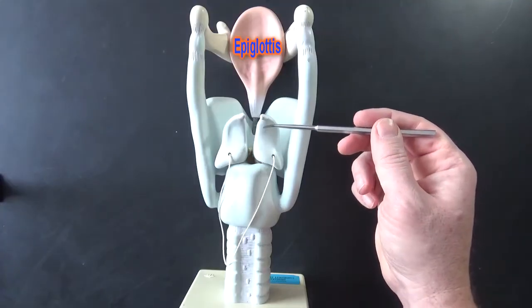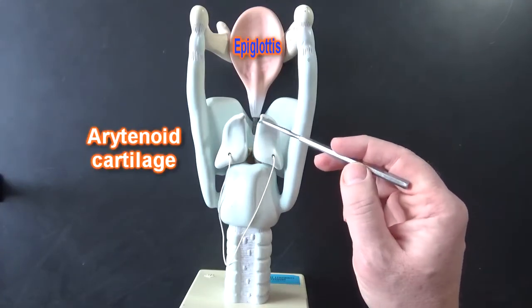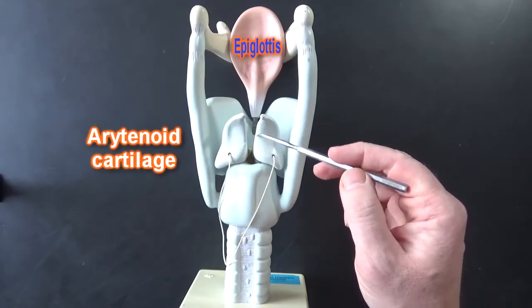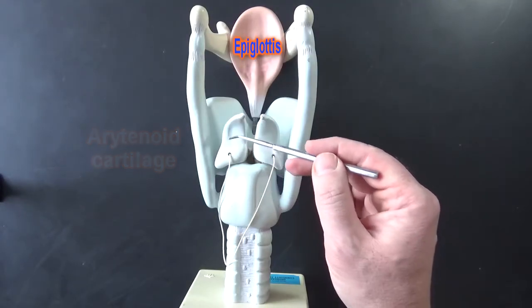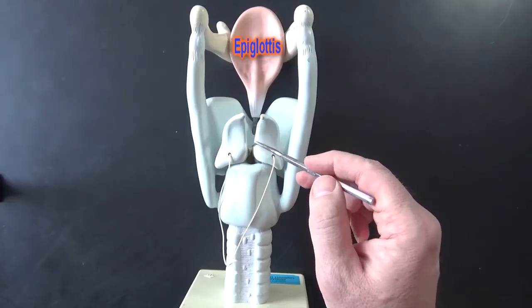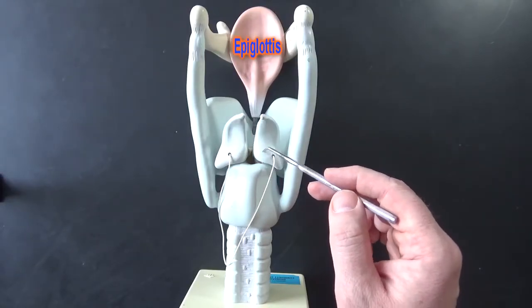Here we have the arytenoid cartilages. The arytenoid cartilages are kind of triangular shaped and they sit on top of the cricoid cartilage. These arytenoid cartilages are where the vocal cords attach.